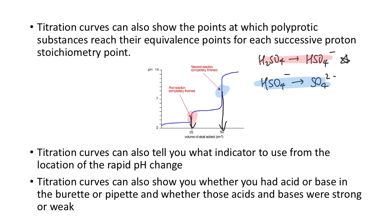You can also use titration curves to tell you what indicator to use from the location of the rapid pH change. If the equivalence point rapid change occurs at a low pH, you'd need an indicator with a low pH end point. If it occurs slightly above pH 7, you'd need an indicator that changes color at a slightly basic end point. The titration curve tells you what pH the equivalence point is at, and therefore what indicator you should use.